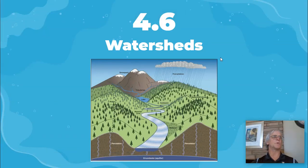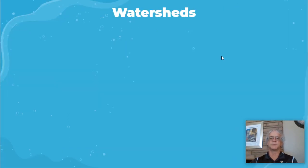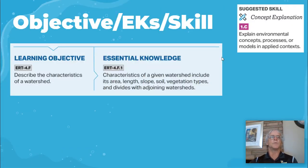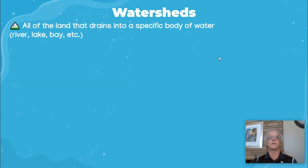Today we're going to be covering 8.4 human impacts on wetlands and mangroves. Before we get there, we're going to review section 4.6 watersheds. Section 4.6 basically describes characteristics of a watershed — a watershed is all the land that drains into a specific body of water.